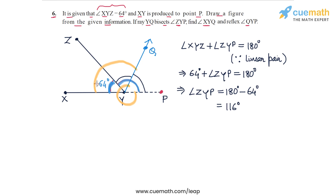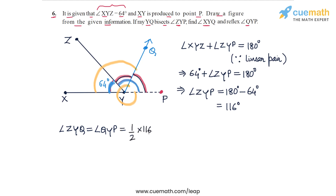Now we can find angle ZYQ and angle QYP, because both of these are half of angle ZYP. Both are half of 116 degrees. Half of 116 degrees is 58 degrees, so both angle ZYQ and angle QYP are equal to 58 degrees.